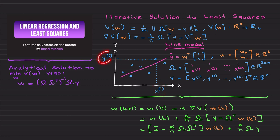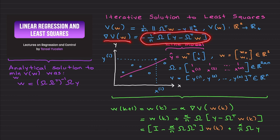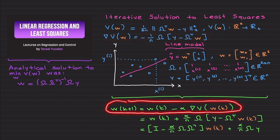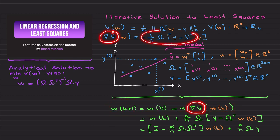The estimated model is y-hat = w^T times [1, x]^T, where x is the independent variable and y is the dependent variable. If you haven't watched the previous video on linear regression and least squares, you should watch that first. In the previous video I found the analytical solution; here I derive the iterative solution. Taking the gradient of V with respect to w and inserting it into the gradient descent update equation, you obtain the final iterative expression by grouping terms that depend on w and those that don't.